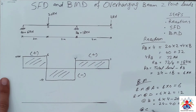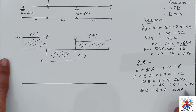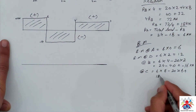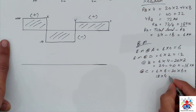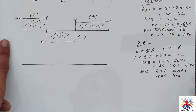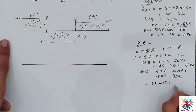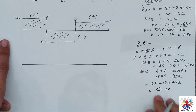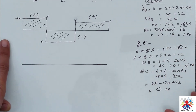Bending moment at point C: 6 multiplied by 8 minus 20 multiplied by 6 plus 18 multiplied by 4. At point C there is no moment arm so no additional term. This gives 48 minus 120 plus 72, which equals zero. Since bending moment is zero at both A and C, our calculation is correct.